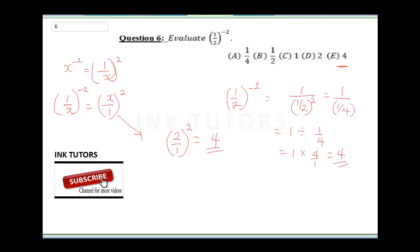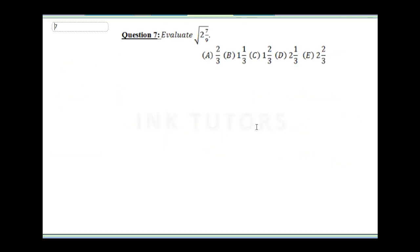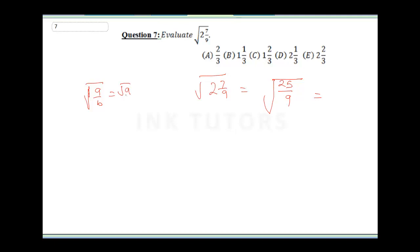Question seven: Evaluate the square root of 2 and 7/9. First convert to an improper fraction: 9 × 2 = 18, plus 7 = 25, so we have √(25/9). Using the rule that √(a/b) = √a ÷ √b, this gives √25 ÷ √9 = 5 ÷ 3 = 5/3. Converting to a mixed number gives 1 and 2/3. The final answer is C.